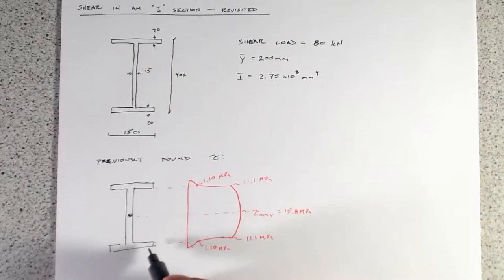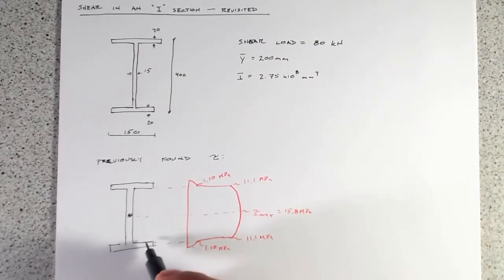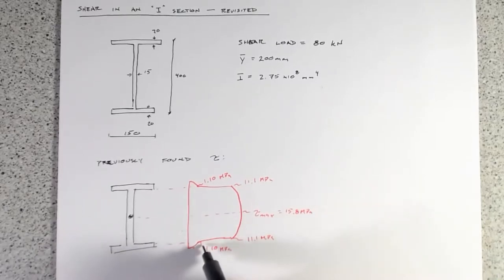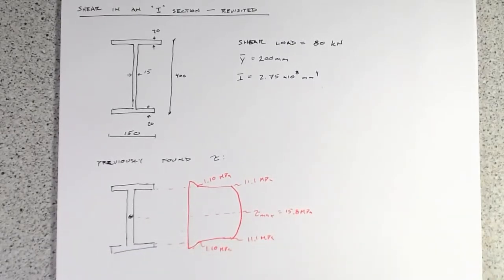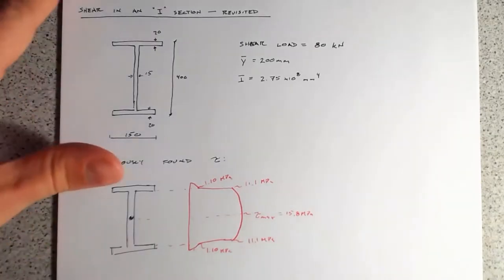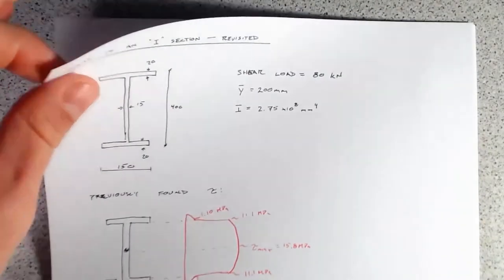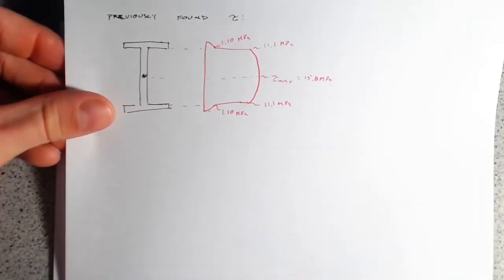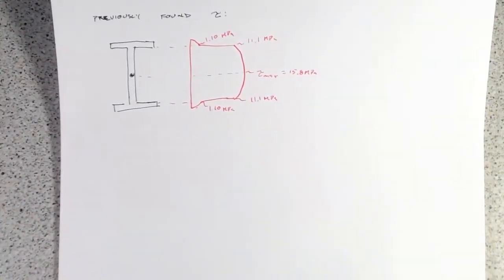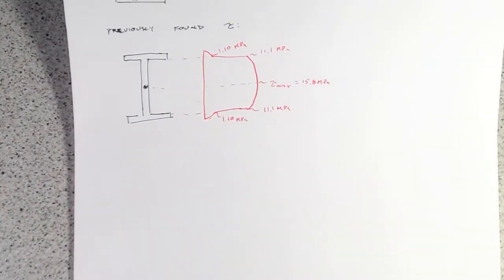The problem with this shear stress distribution is in the flanges, because we've got a free edge at the top — we can't have 1.10 megapascal of stress there because we need to have zero stress at a free edge. So what we want to do is reanalyze this section using what we've learned with shear flow.